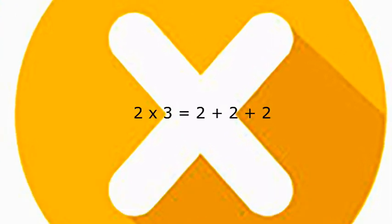For example, 2 times 3 equals 2 plus 2 plus 2, or 2 added to itself 3 times.